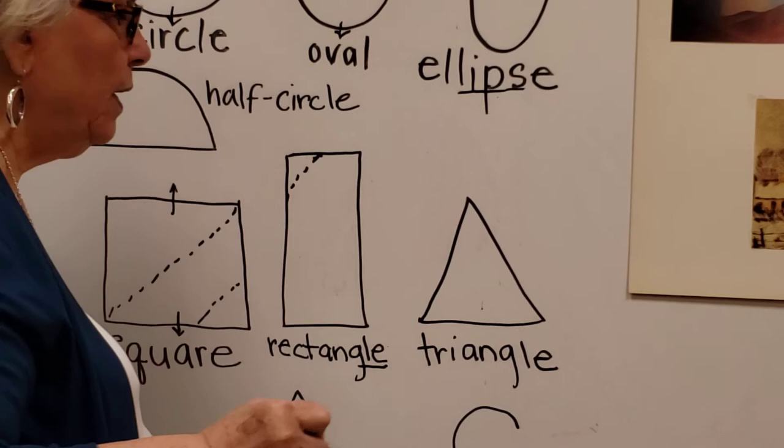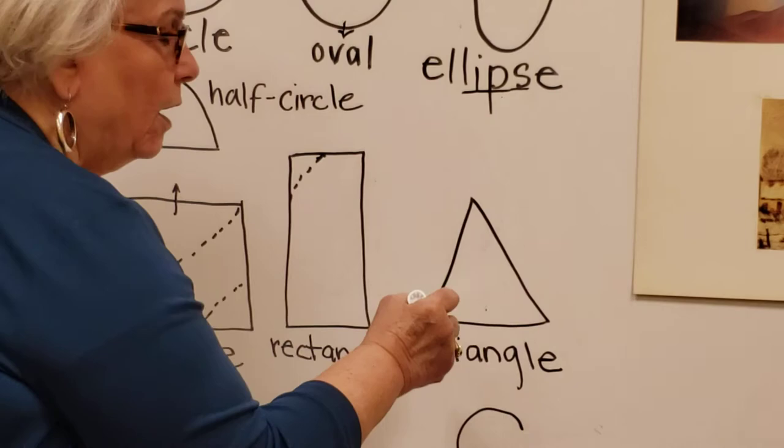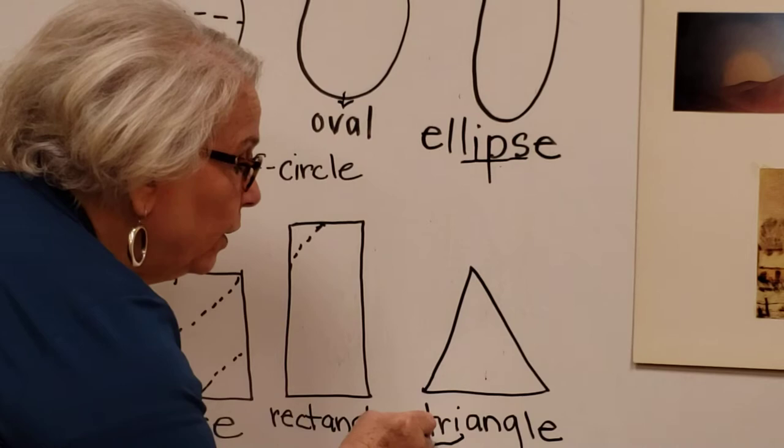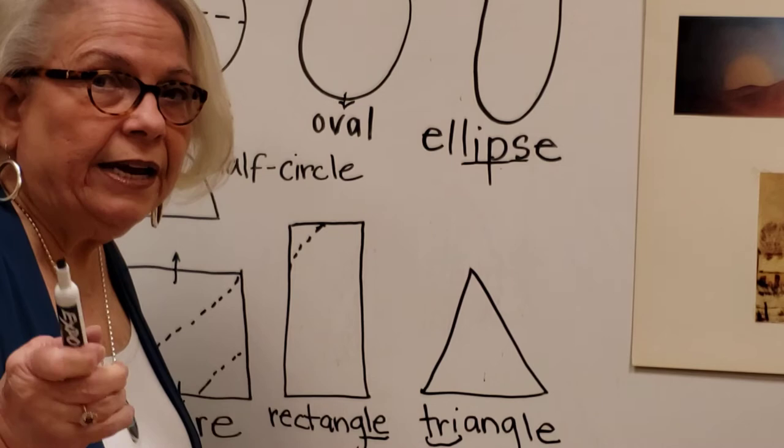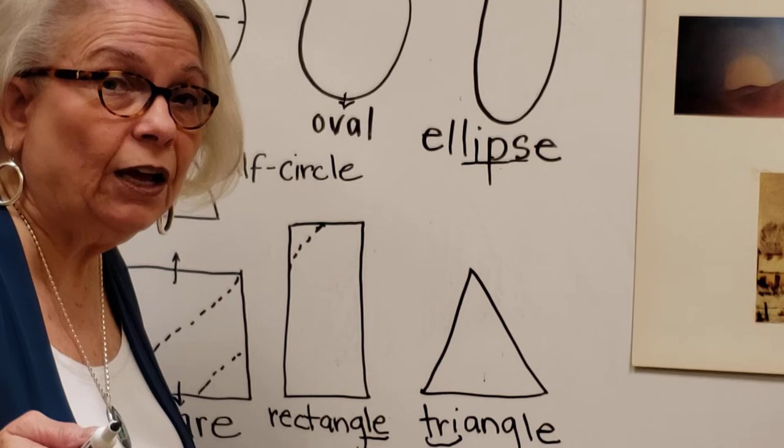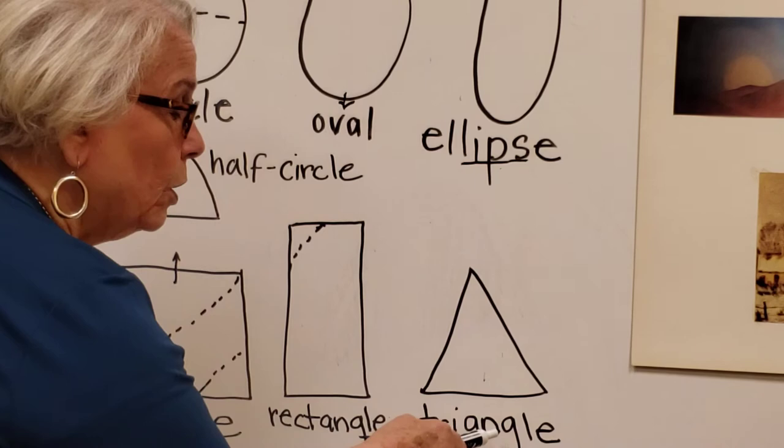A triangle looks just like this. It only has three sides. If you look at the prefix 'tri' in the word triangle, tri means three. You might remember when you were a little kid you had a tricycle — it had three wheels. A triangle has three corners or angles.